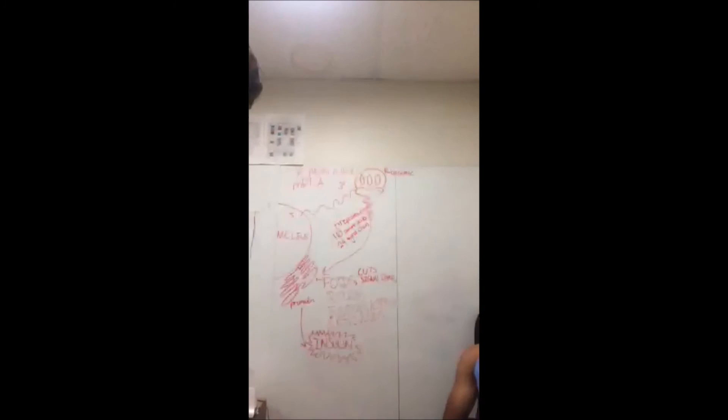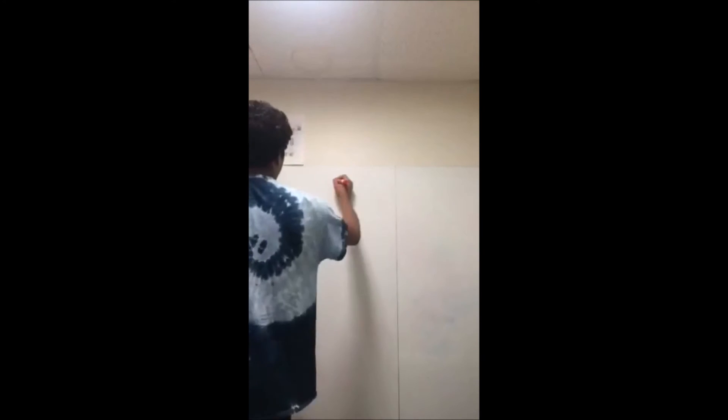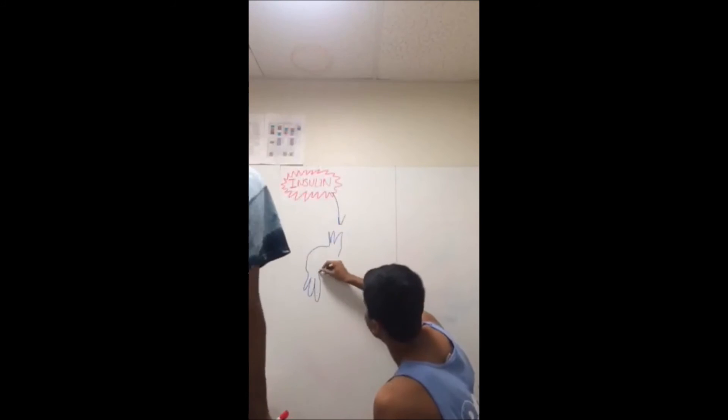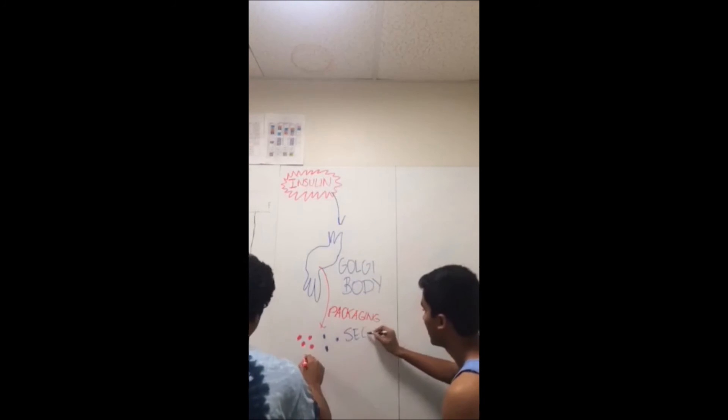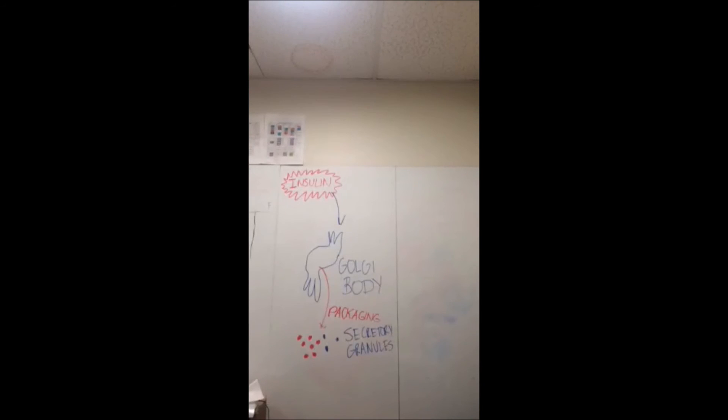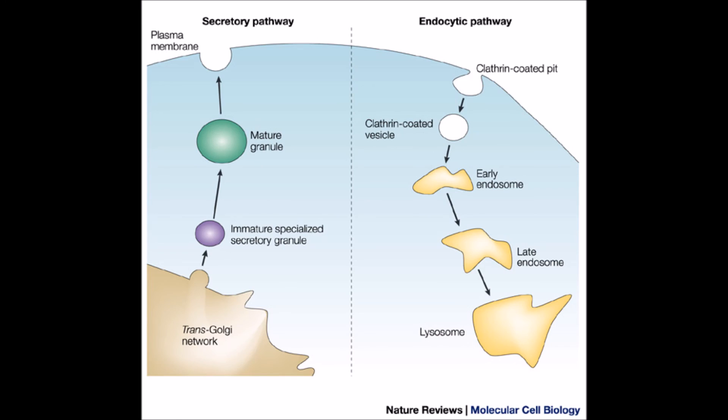These two molecules then go into the Golgi apparatus, where they are combined and packaged into secretory granules. Secretory granules are essentially little vesicles containing insulin and C-peptide that are accumulated in the cytoplasm and leave the beta cells through exocytosis when glucose levels are high outside of the cell.